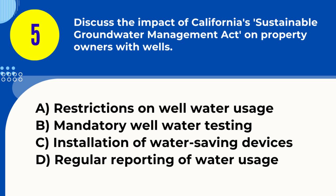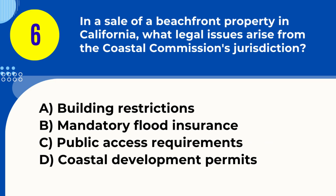Question 5. Discuss the impact of California's Sustainable Groundwater Management Act on property owners with wells. A. Restrictions on well water usage B. Mandatory well water testing C. Installation of water-saving devices D. Regular reporting of water usage. Answer: A. Restrictions on well water usage. Explanation: The Sustainable Groundwater Management Act may impose restrictions on groundwater usage for property owners with wells to ensure sustainable water management.